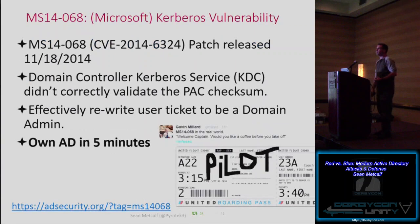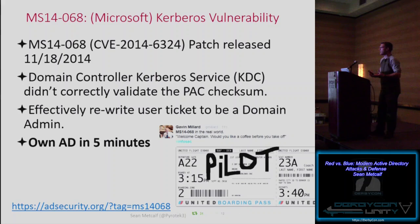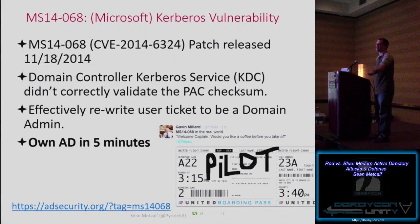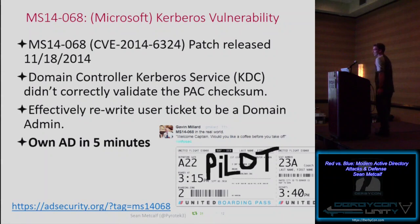Last November, Microsoft had a major vulnerability in how Kerberos was handled on domain controllers: MS14-068. Domain controllers did not properly validate the PAC checksum on Kerberos tickets. The PAC is the Privilege Attribute Certificate, which contains group membership for the user. A domain user could rewrite their ticket to say 'I'm now a domain admin,' pass it to the domain controller, and the DC would accept it. Gavin Millard had a great analogy: you take a boarding pass, write 'pilot' on it with a Sharpie, hand it to the flight attendant, and they escort you into the cockpit.